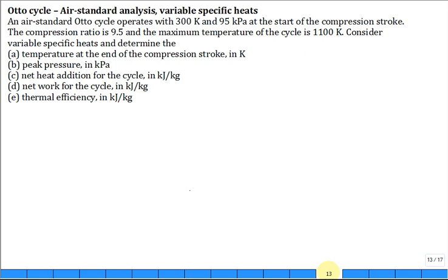Let's solve a problem. We have an Otto cycle air standard analysis using variable specific heats. It operates with a given initial temperature T1 and initial pressure P1 at the start of the compression stroke. The compression ratio is 9.5, the maximum temperature is 1100 Kelvin. Considering variable specific heats, what you want to do is go ahead and make sketches.